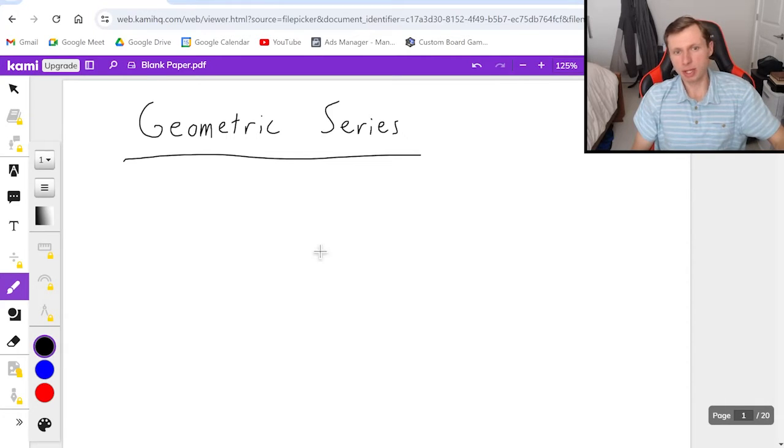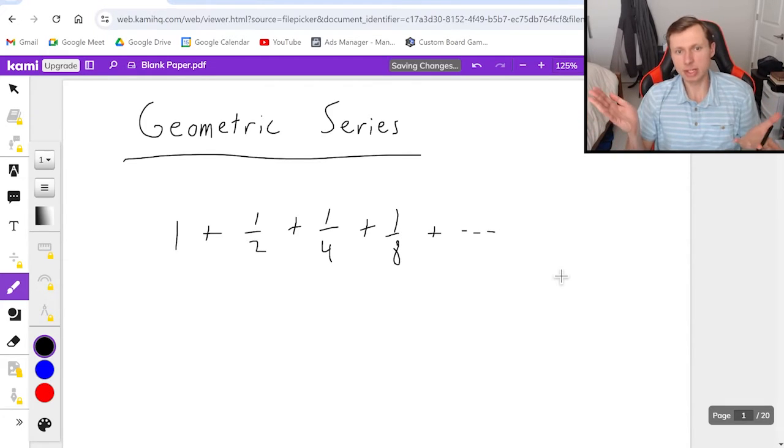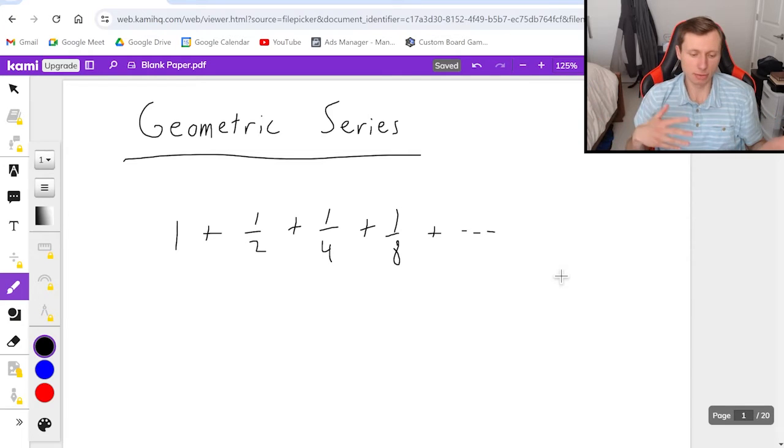But the reason why they're fun is because they're some of the only series that we can actually find the sum of. In other words, when we look at series it's always like one plus one-half plus one-fourth plus one-eighth plus dot dot dot. And most of the time when we do have series we can only tell if they converge or diverge. We can't tell what the actual sum is or what it converges to. But geometric series is one of the only two types of series we can do that for. The second kind is telescoping series which we'll cover in a later video.